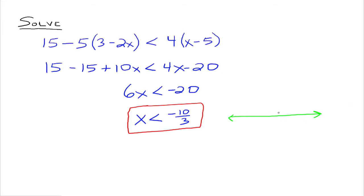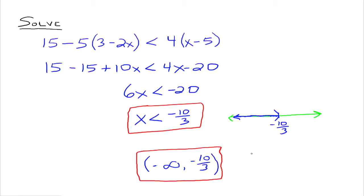Graphically, here's negative 10 thirds, and we shade out to the left because we want numbers that are less than negative 10 thirds. Negative 10 thirds is not included, so open circle or parenthesis. In interval notation, we would do negative infinity up to negative 10 thirds, not included. That's the solution set for this problem in the different notations.